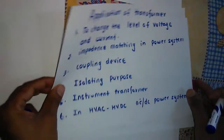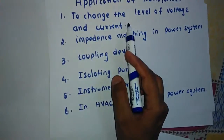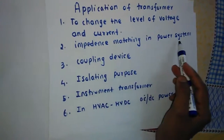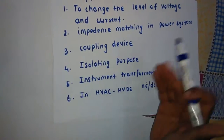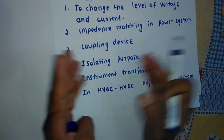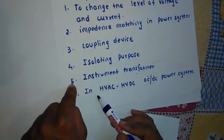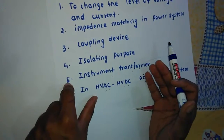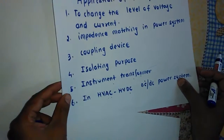Today we discussed about the transformer. A transformer is used to change the voltage or current in electric power systems. It is used for impedance matching in power systems, and also as a coupling device. It is used for isolation purposes, since there is one electrical circuit on the primary side and another on the secondary side, separated by the magnetic circuit. It is also used for measurement of voltage and current as an instrument transformer, and for high voltage AC and high voltage DC transmission through back-to-back connections to step up or step down the voltage.